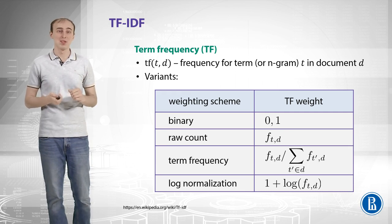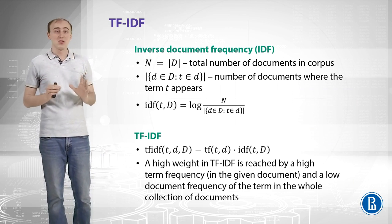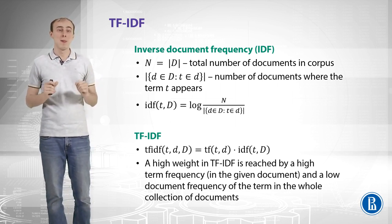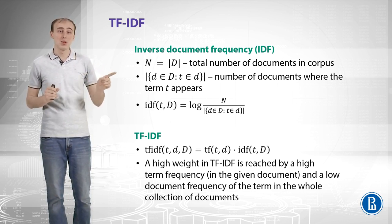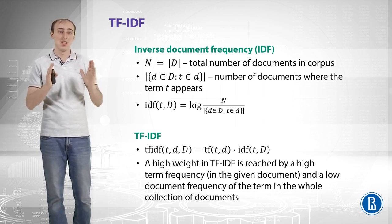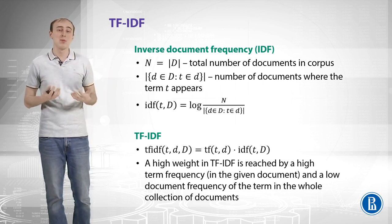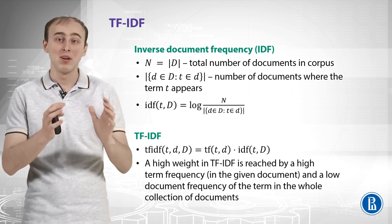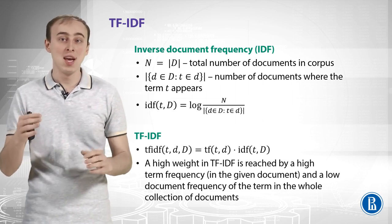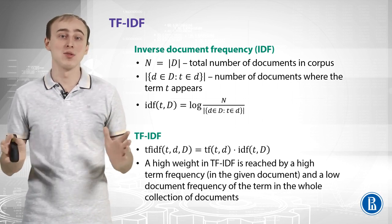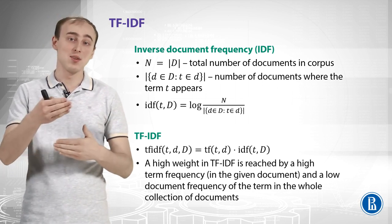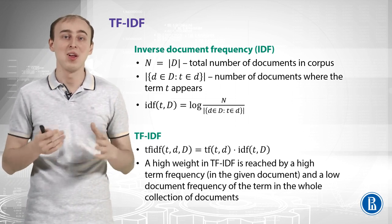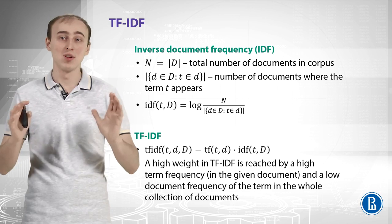We will use term frequency in the following slides. Another thing is inverse document frequency. Let's denote by capital N the total number of documents in our corpus, capital D. Now let's look at how many documents in that corpus contain a specific term — that is the number of documents where the term appears. Document frequency divides that number by the total number of documents. Inverse document frequency swaps that ratio and takes the logarithm of it. So IDF is just the logarithm of N over the number of documents where the term appears.